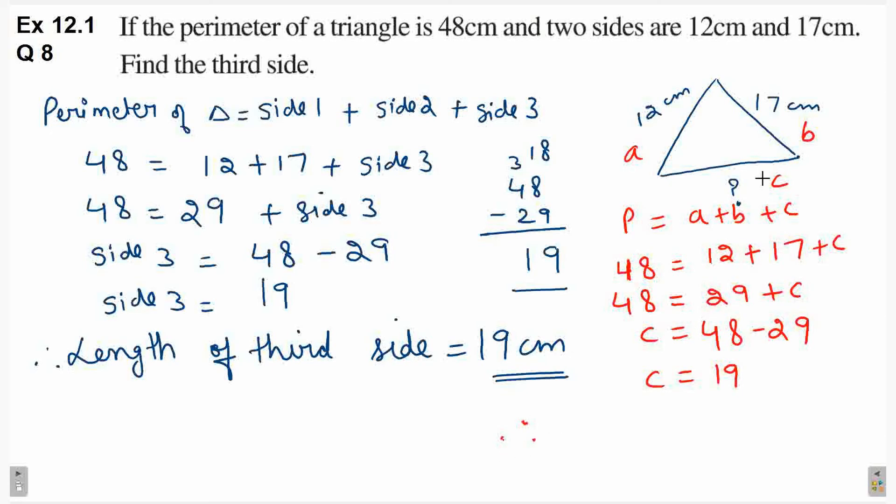In that case also you have to write at the end the same thing, because c represents the third side. Therefore, length of third side is equal to 19 cm. Okay, thanks for watching this video, see you next time, take care, bye.